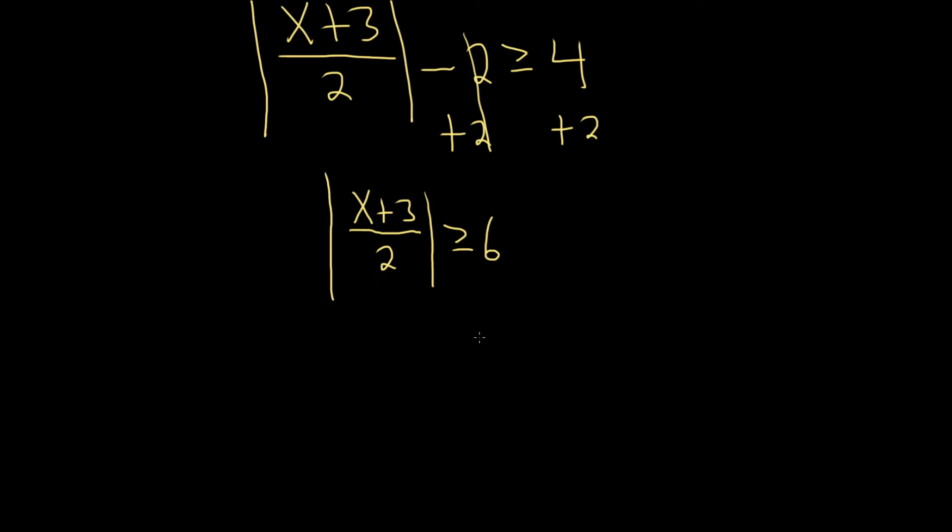Now there's a rule that we can use to get rid of the absolute value. Here's how I memorize it. If you have the absolute value of A greater than or equal to B, then A is greater than or B, and then less than or equal to the opposite.